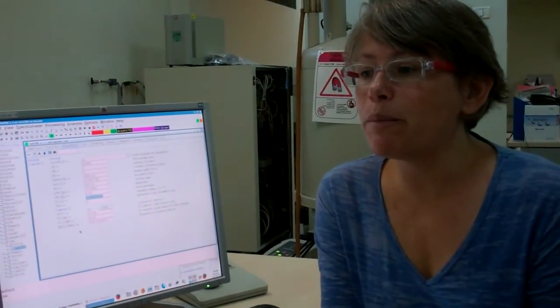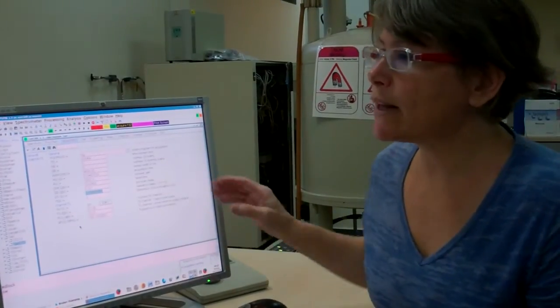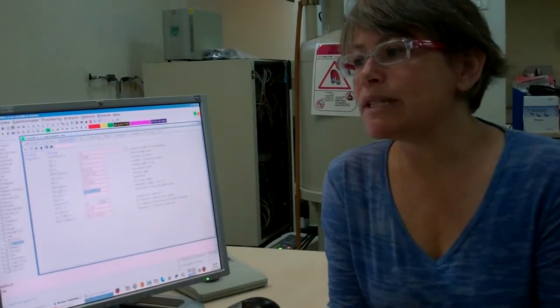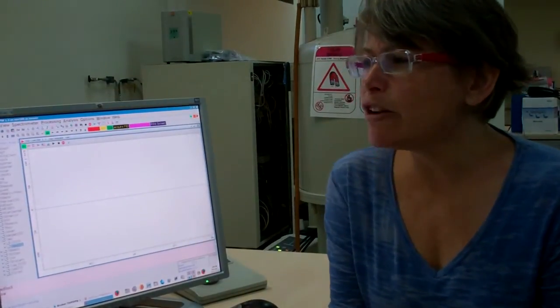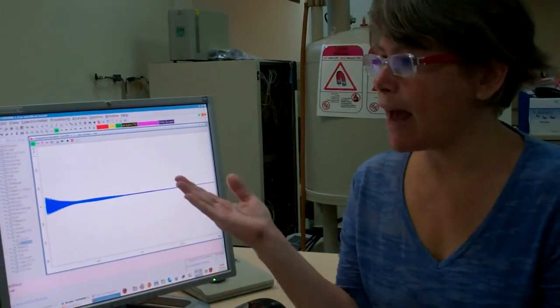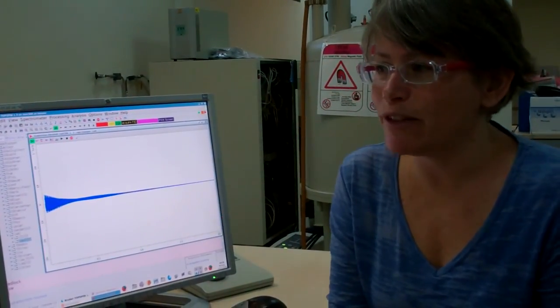Step number 7C is to start the acquisition of an FID using the default parameters for a single shot, which I'll do by clicking on this play button. Step number 7D, where we tailor the acquisition parameters to this particular sample based on the outcome of this scout shot, will be covered in the next video.